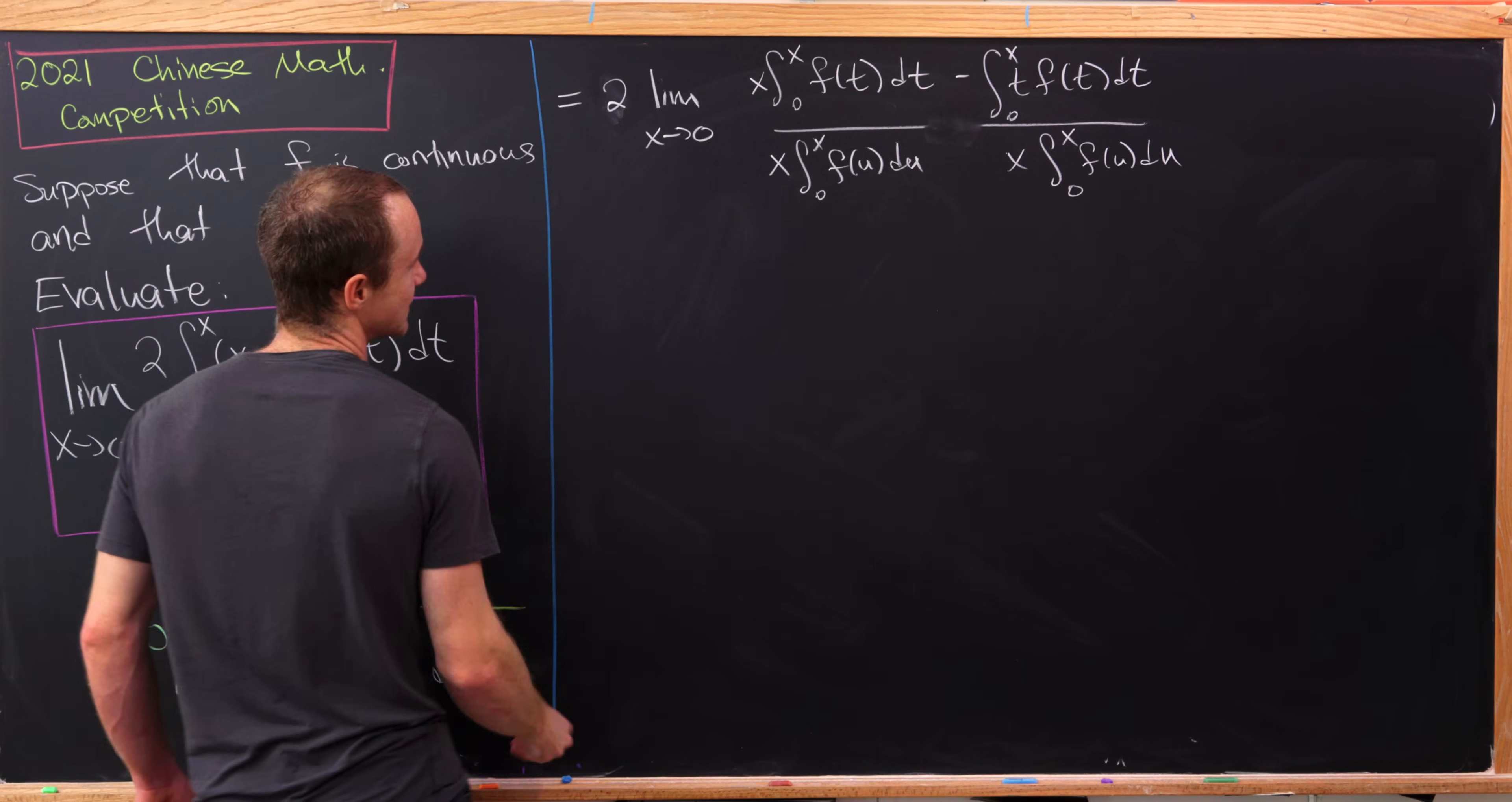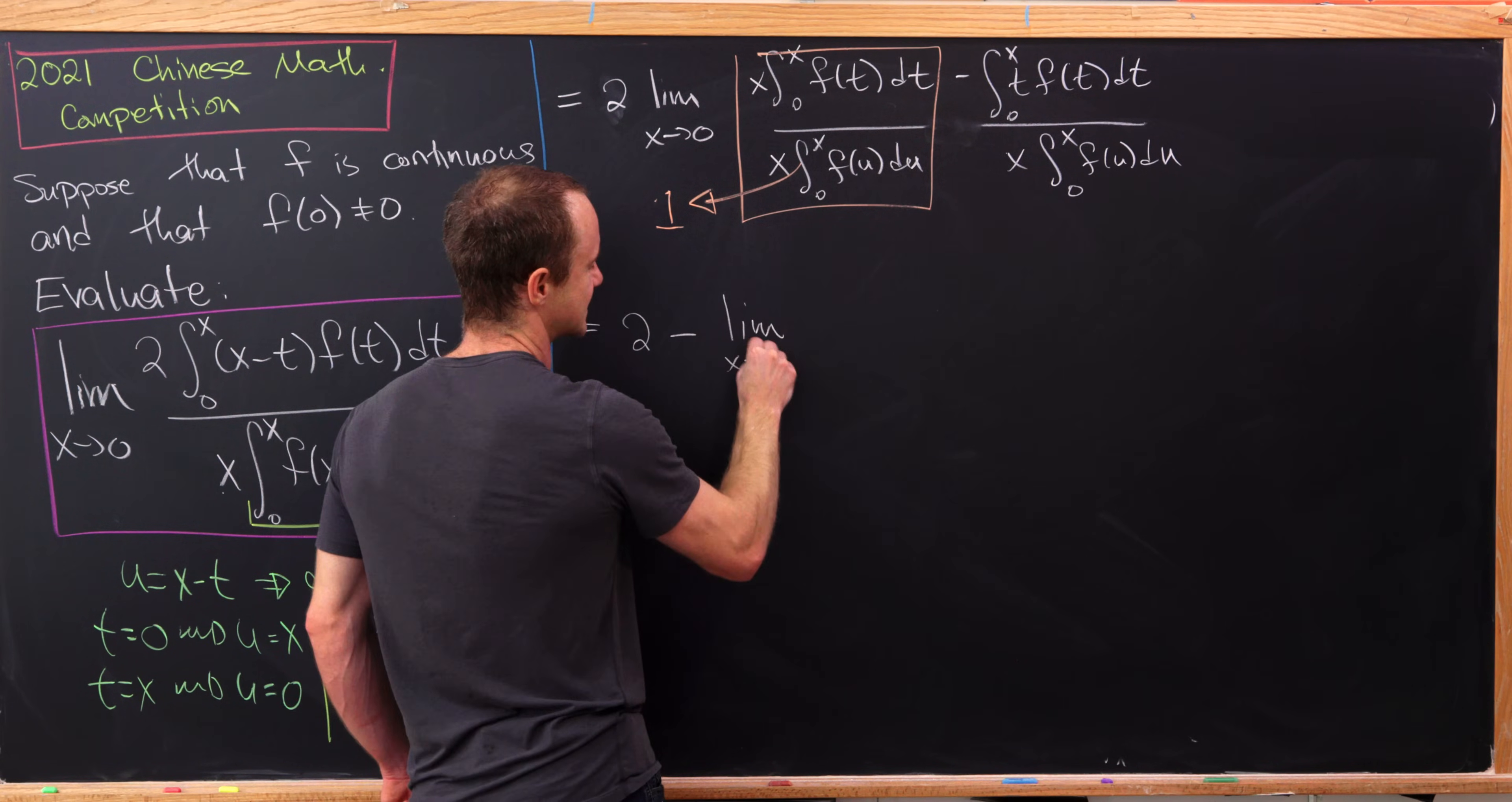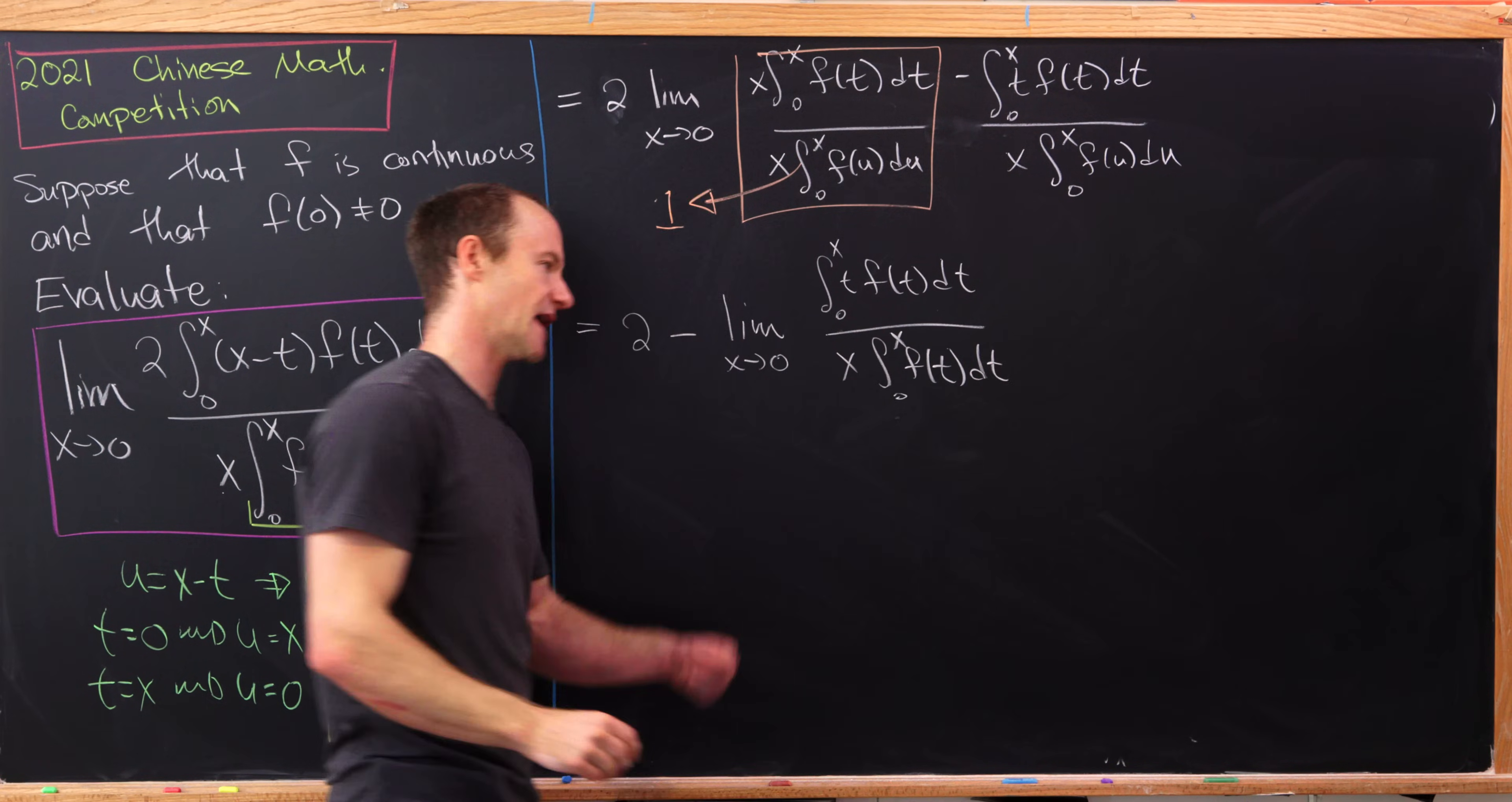But now let's observe in the first term here, I have the same thing in the numerator as well as the denominator. So that cancels out simply to the number one. And then maybe I'll just go ahead and rewrite this as two minus the limit as x goes to zero of what we have right here. So that'll be zero to x of t times f of t dt over x times the integral from zero to x of f of t dt again.